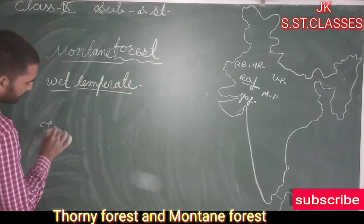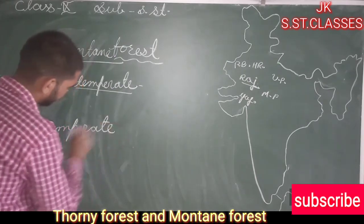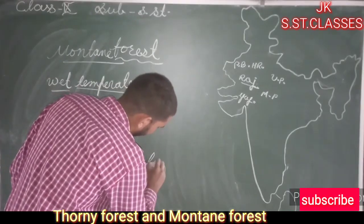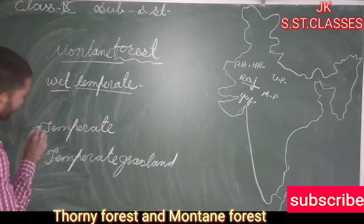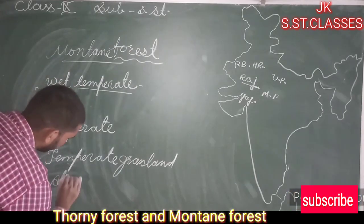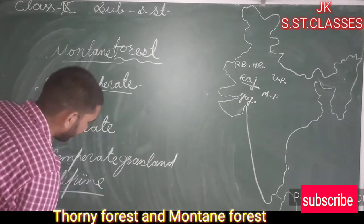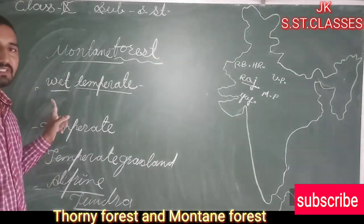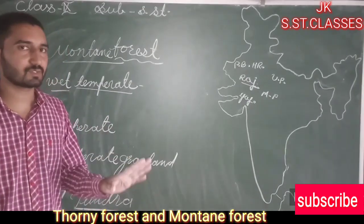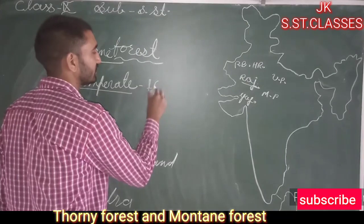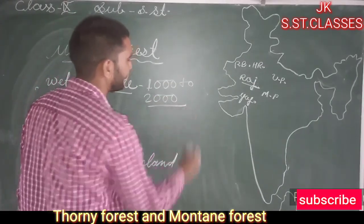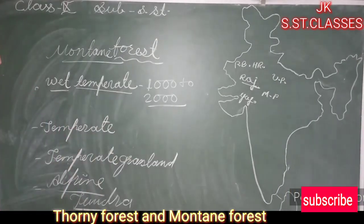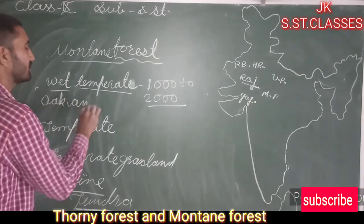The sub-categories of mountain forests include wet temperate forest, temperate forest, temperate grasslands, alpine vegetation, and tundra vegetation at the highest elevations. The first category, wet temperate forest, is generally found in areas having an elevation of 1,000 to 2,000 meters, and is pre-dominated by oak and chestnut trees.